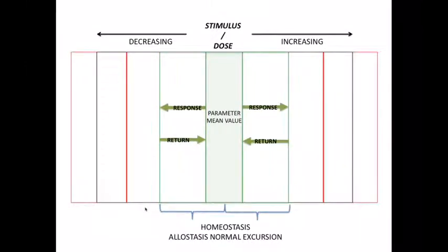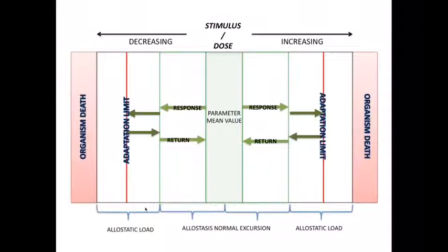Another way to look at it schematically and linearly is depicted here, where you have some parameter or mean value, with response and return windows for homeostasis and normal allostasis. Then the stimulus either decreasing toward under-stimulating or increasing toward over-stimulating, with the adaptation window limit indicated as such. The allostatic load is the window that is outside of the normal response and return window to parameter mean values, approaching and staying near the adaptation limits — or exceeding them — ultimately possibly ending in organism death.